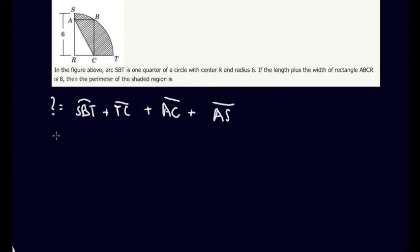So we can start by plugging in things that are really easy for us to find. So arc SBT is one of those, for example. It's one-quarter of the perimeter of the big circle if we were to draw out the rest of the circle, but this is the same thing as one-fourth of the perimeter of the whole circle. So one-fourth of our formula for circle is 2πr. So one-fourth times 2π and the radius we know is 6. It's given to us in the problem.